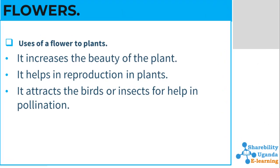The uses of a flower to the plant itself: the flower increases the beauty of the plant and helps to attract pollinators so that pollination can take place. It helps in reproduction in plants — had there not been flowers, the plant would not be able to reproduce and therefore would not be able to produce seeds. The flower also attracts birds for helping with pollination.